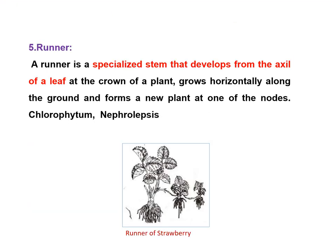The next specialized plant part is the runner. A runner is a specialized stem that develops from the axil of the leaf at the crown of the plant, grows horizontally along the ground, and forms new plants at one of the nodes. The rooted daughter plants are dug out when they are well rooted and developed and used for further multiplication. Examples of runners are nephrolepis, chlorophytum, strawberry, etc.